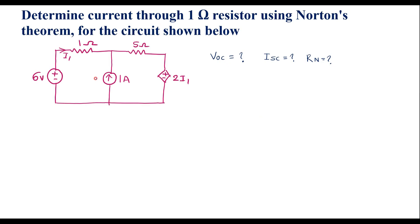In Norton's theorem, the branch in which we are finding current — let me call this the AB branch — we are supposed to open that branch. So to find the current through the 1 ohm resistor, we open this branch. Now let me redraw the circuit.